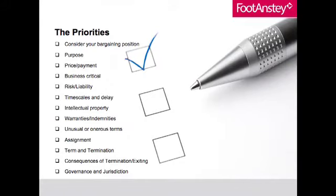If you make or offer a warranty, you're essentially promising that something is true or that you're going to do something. So if you're putting warranties into a contract or you see warranties in a contract, they're very important because they're promises. You have to be sure that if you're giving warranties, you can honour those promises, because if you don't, you could be in breach of the contract and may be liable for damages. So another really important thing is to pay attention to what warranties you're being given and what warranties you're giving.